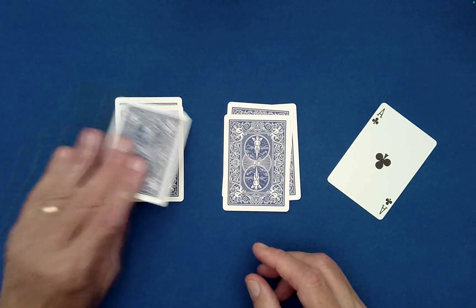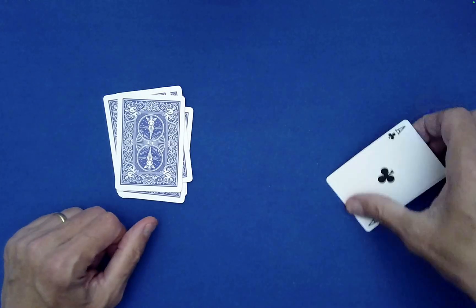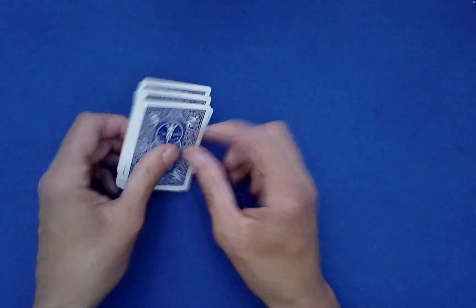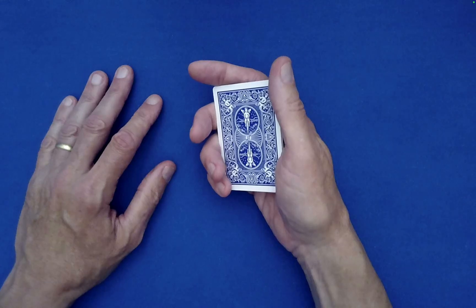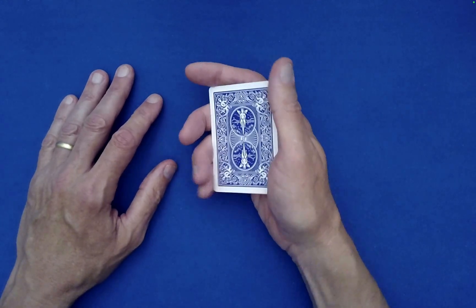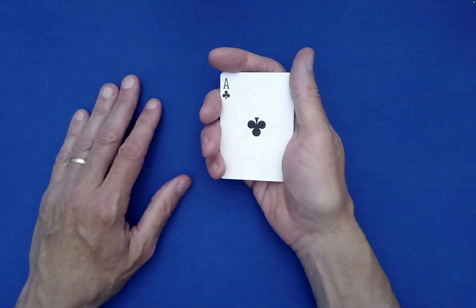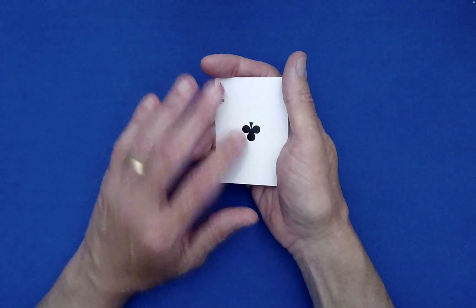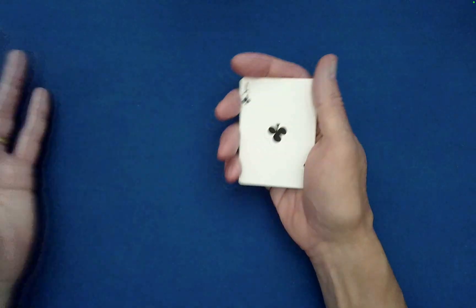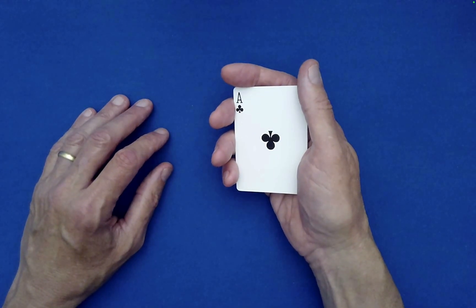So they know that one. This one goes on top. Now you could have this face down, and I'm not sure if it's better or worse to do it that way. I think it's nice that the spectators see the ace of clubs moving around quite randomly.